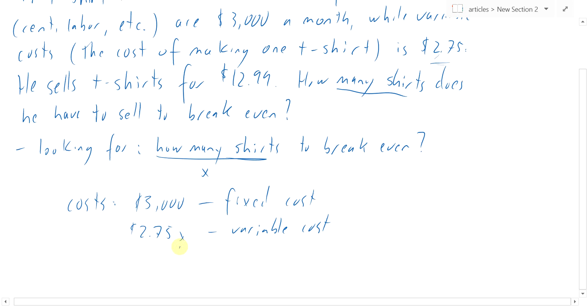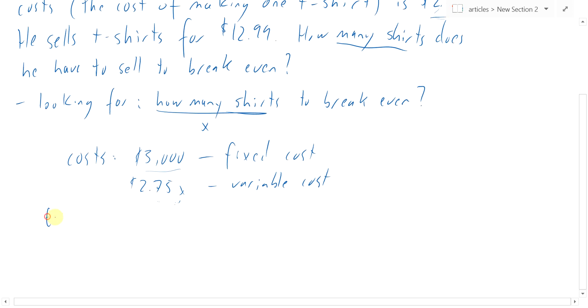So if he makes 10 shirts, if x is 10, then he lays out $27.50. And so for making 10 shirts in a month, his total cost would be the $27.50 for making the 10 shirts, plus the $3,000 because he has to pay that every month, that's his fixed cost. So total cost equals 2.75x plus $3,000.